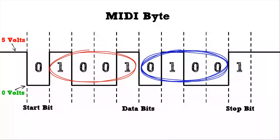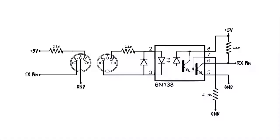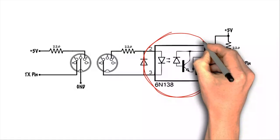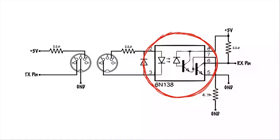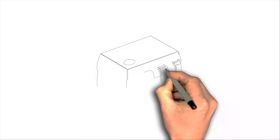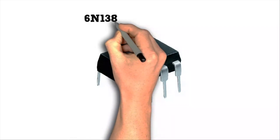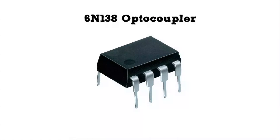If the receiving instrument is not set to this channel it will simply ignore the message. Now let's take a look at the actual components of the MIDI circuit. The majority of the circuit is made of very simple components like resistors and diodes, so even a beginner should be able to recognize most of these parts. The one part you may not be familiar with is this 6N138 optocoupler chip, so let's start by taking a look at this in more detail. The 6N138 optocoupler is an 8-pin microchip that helps protect and electrically isolate your MIDI device from whatever you plug into it.